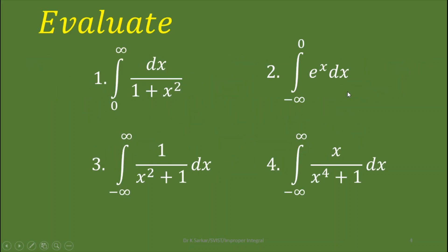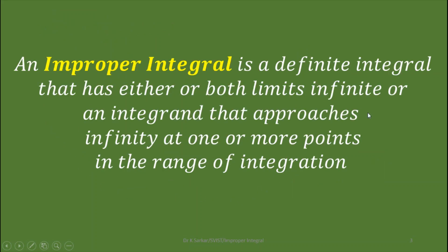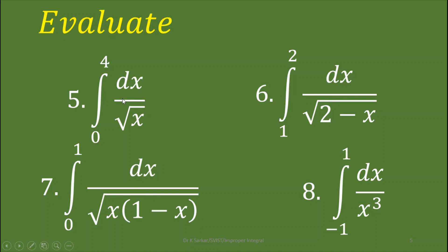Now the first kind of improper integral. An integrand that approaches infinity at one or more points in the range of integration. If we see these examples, observe that the integral becomes infinity at the limits or at any point in between the limits.